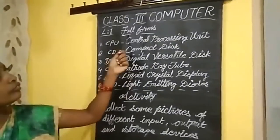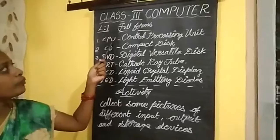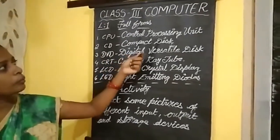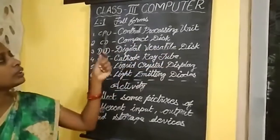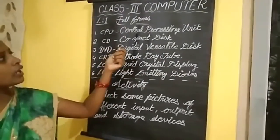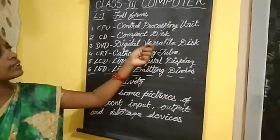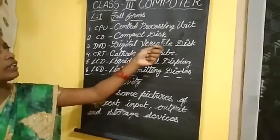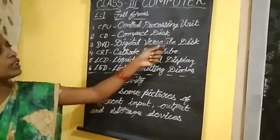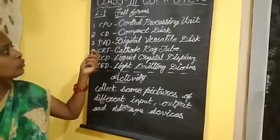First one: CPU. What is the full form of CPU? Central Processing Unit. See the spelling also: C-E-N-T-R-A-L, central; P-R-O-C-E-S-S-I-N-G, processing; U-N-I-T, unit. Central Processing Unit.